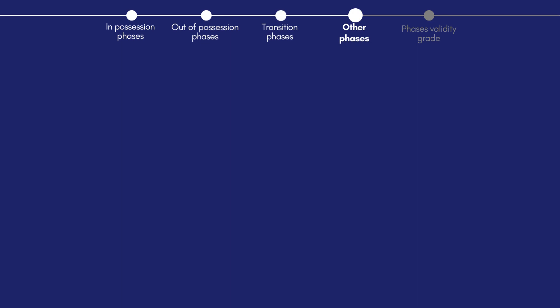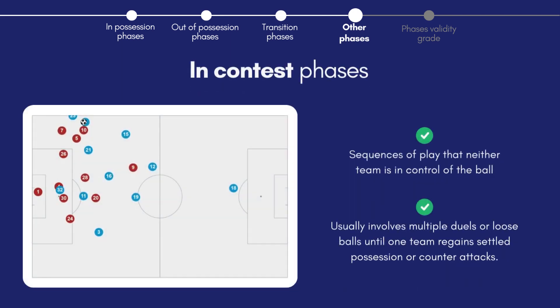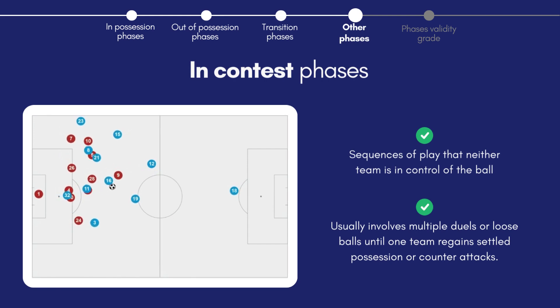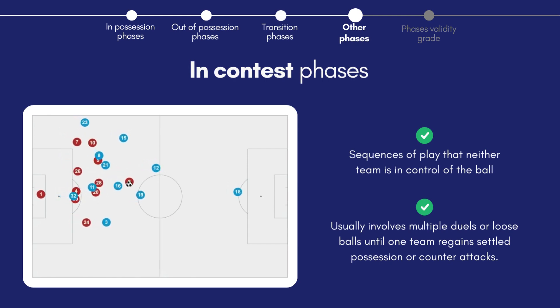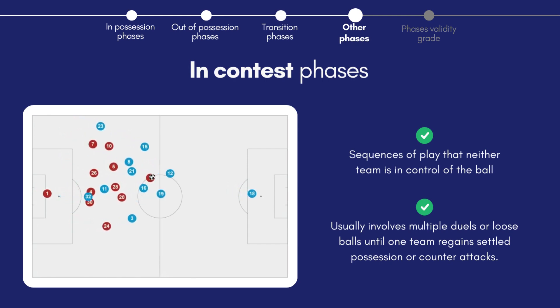A phase is in contest when both teams are fighting for possession and neither team has clear control of the ball. This ends when the nearest defined new phase of play begins.